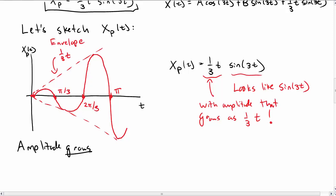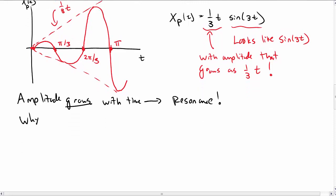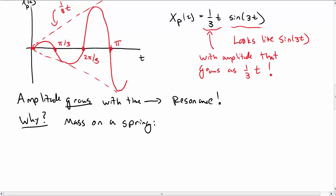So the amplitude is increasing with time, and this is the hallmark of resonance, a growing amplitude rather than decaying amplitude. I'm going to talk for a minute about why this happens. So why is the amplitude growing with time?